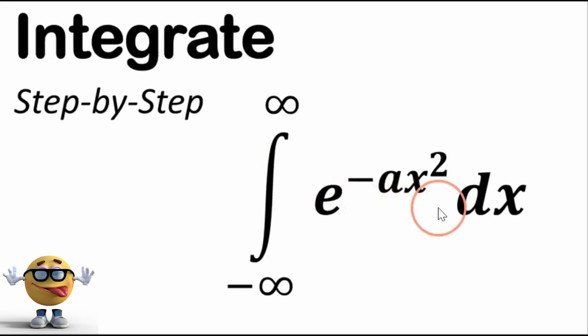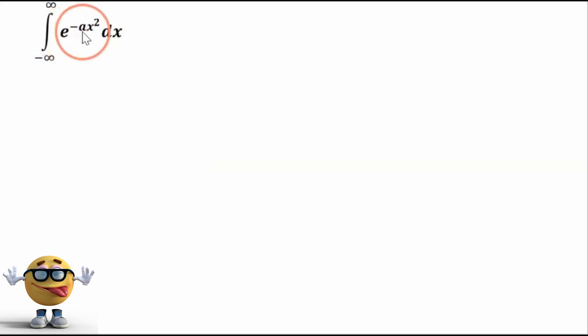All right, my friends, we're going to integrate the Gaussian function right here, e to the negative ax squared from negative infinity to infinity. And just to note, I have many modifications of this type of integral, so you can check those out too.